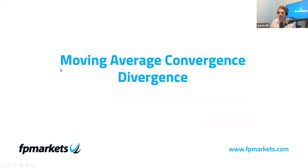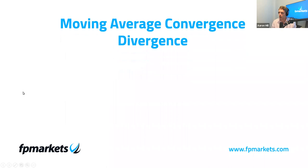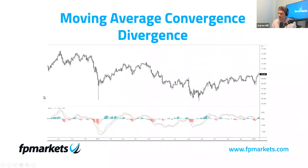The Moving Average Convergence Divergence — commonly pronounced as either MACD or 'Mac-D' — is one of the more popular indicators. It was developed by Gerald Appel in the late 1970s, around 1979. This is a chart from TradingView. For me, the MACD is the best of both worlds in that it's a trend-following indicator and also serves well as a momentum oscillator.